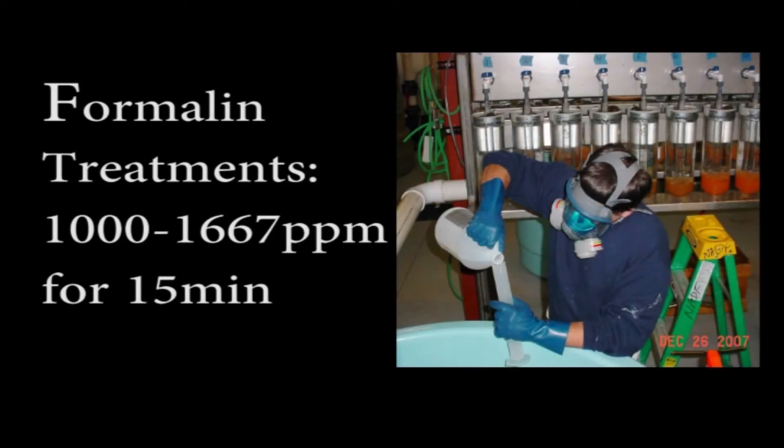It is recommended to treat formalin at a concentration of 1,000 to 1,667 parts per million of flow for a 15 minute exposure of flow through treatment. Treatment can begin at any stage but must cease near hatching. More details on egg treatments can be found in the manual.